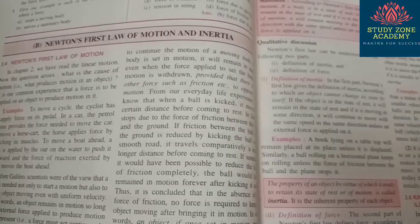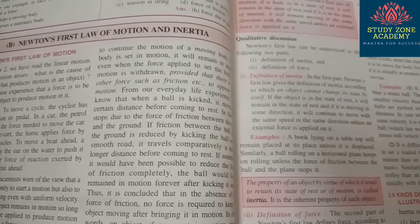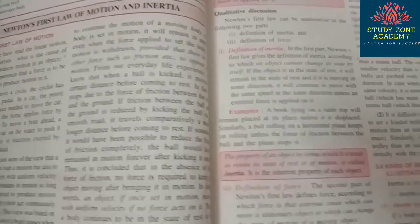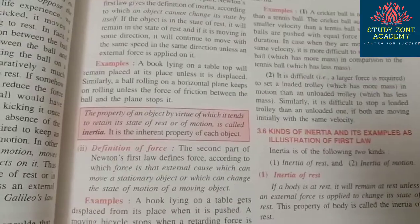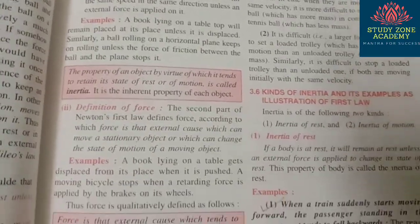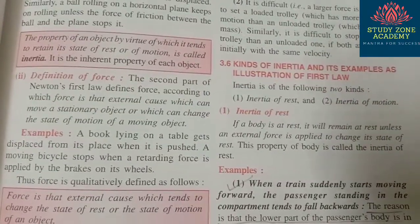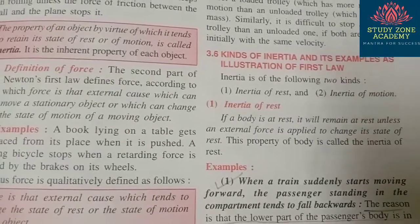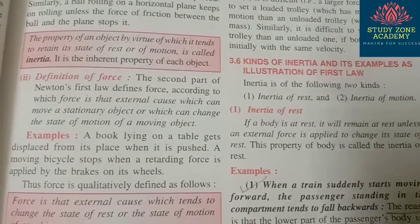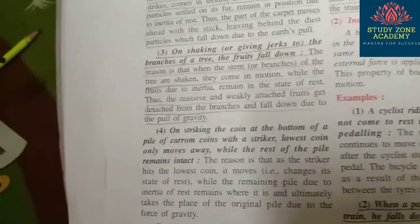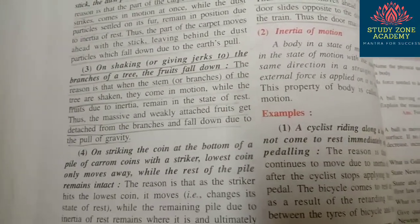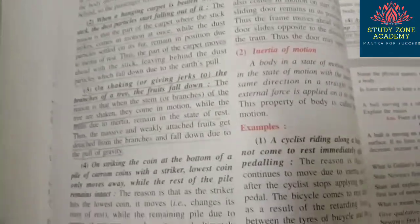From Newton's first law of motion and inertia, you need to prepare all the give-reason questions including inertia of rest and inertia of motion. I suggest focusing on: when a train suddenly starts moving forward, the passenger standing tends to fall backwards; and on shaking or giving a jerk to the branches of a tree, fruits fall down.